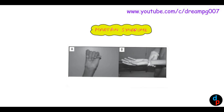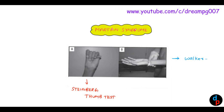Two clinical tests used for diagnosis of Marfan Syndrome are the Steinberg thumb test and the Walker-Murdoch test. In the Steinberg thumb test, by holding the hand in this position, the thumb will always be outside of the grip. In the Walker-Murdoch test, normally a person cannot hold his wrist completely with the help of the other hand, but in this patient he can easily hold.